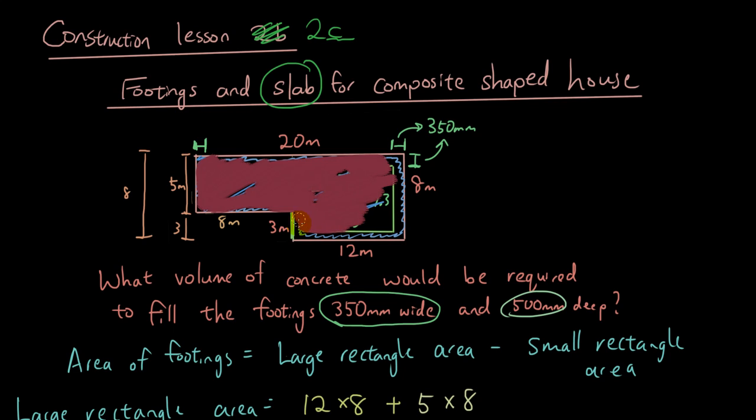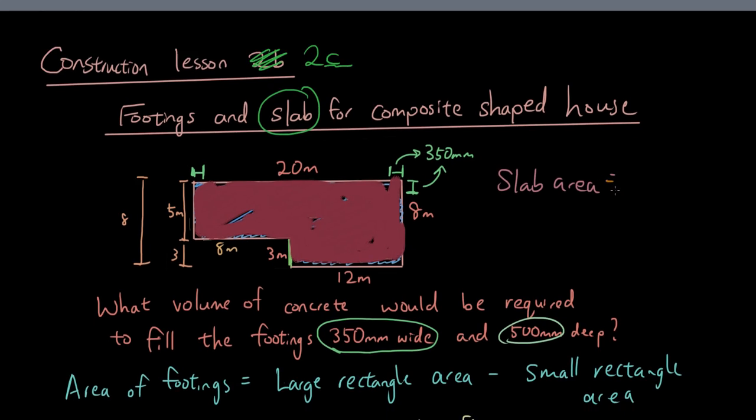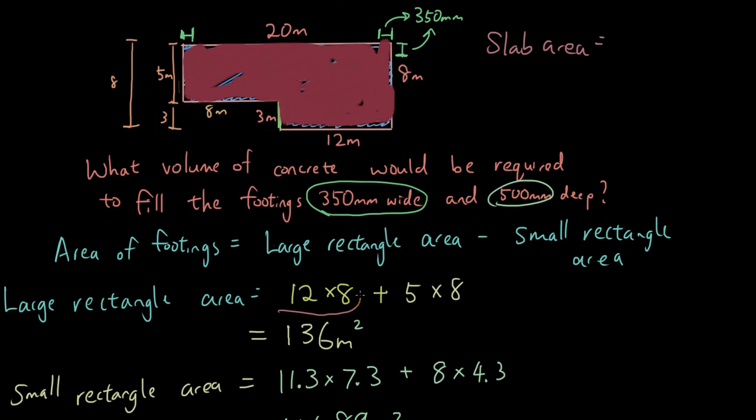So what is the area of the slab? The slab area is simply the area of the large rectangle that we calculated previously. We have 12 by 8 for this rectangle, length times width, plus 8 times 5.